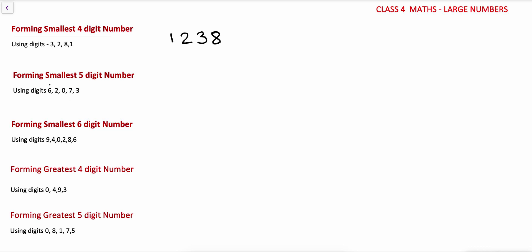Now, forming the smallest 5-digit number using digits 6, 2, 0, 7, 3. The concept is the same — write all digits in ascending order. But remember: 0 cannot come at the first place, it has to be at the second place. So after 0, the smallest digit is 2. We write 2 first, then 0, then the remaining digits in order: 3, 6, 7. So the smallest 5-digit number is 20367.